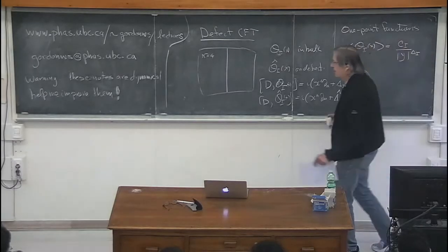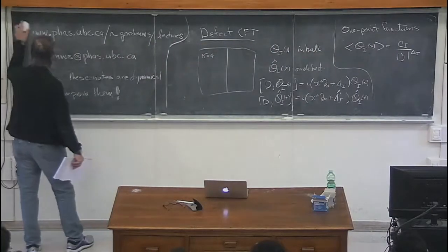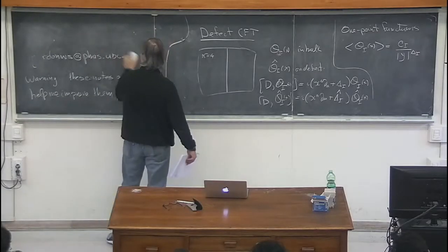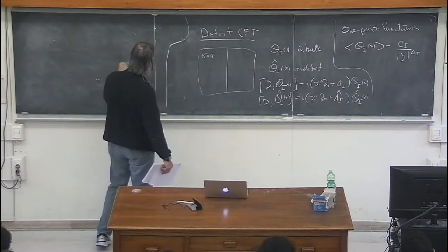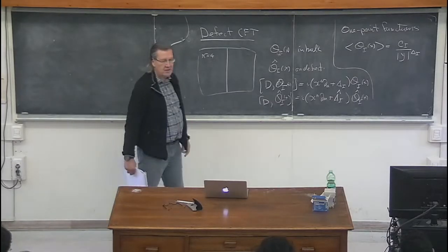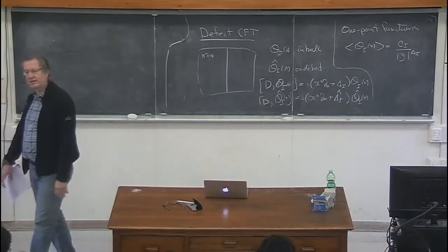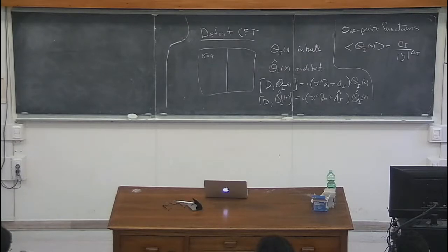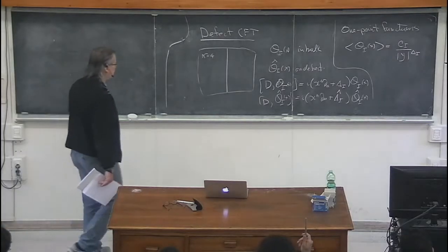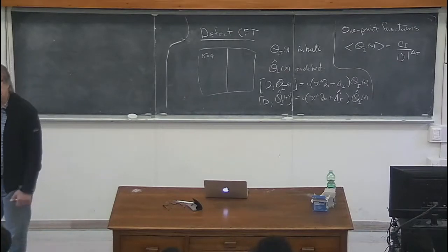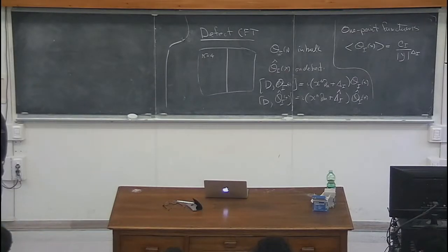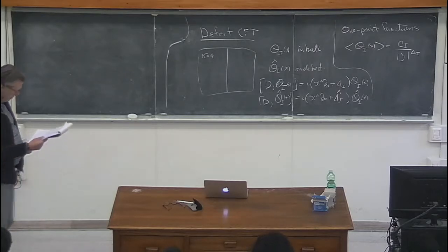The other feature that survives more or less unchanged is the operator product expansion. For operators in the bulk, if they come really close to each other out in the bulk away from the defect, the short-distance singularity shouldn't really care about the presence of the defect — and in fact it doesn't. One could also add more OPE equations where bulk operators approach the defect, and defect operators approach each other.